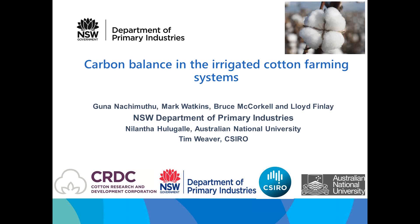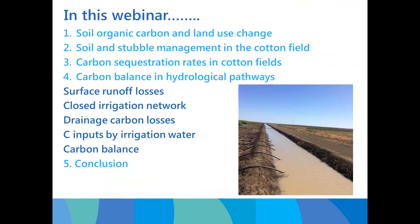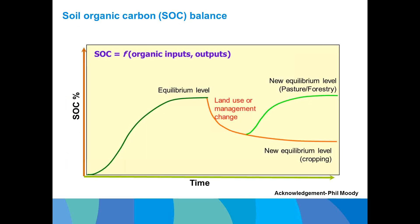Today I will be covering recent carbon balance research in irrigated cotton farming systems, with a special focus on the movement of carbon in runoff, drainage and irrigation water. The webinar will cover soil organic carbon and land use change, soil and stubble management, carbon sequestration in cotton fields, and carbon balance in hydrological pathways — including surface runoff losses, closed irrigation networks, drainage carbon losses, and carbon inputs by irrigation water.